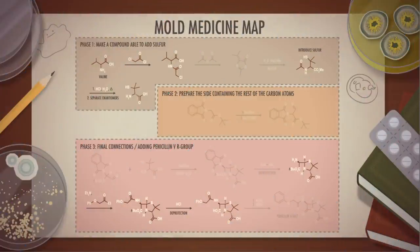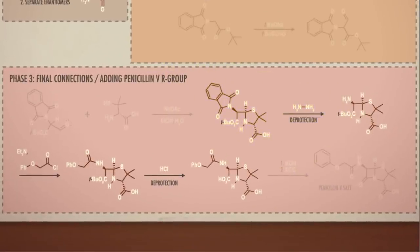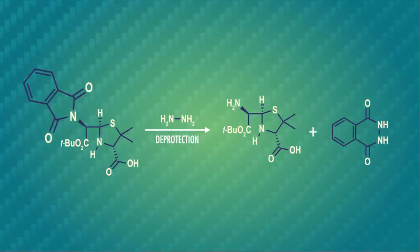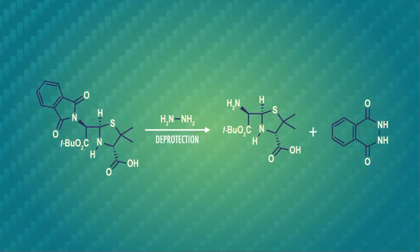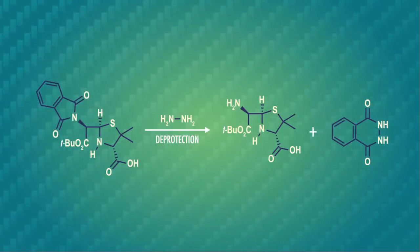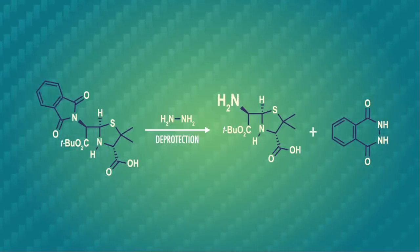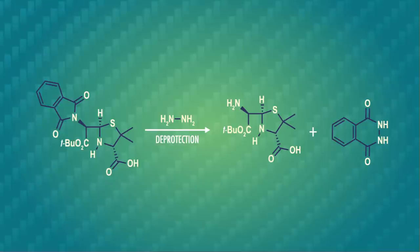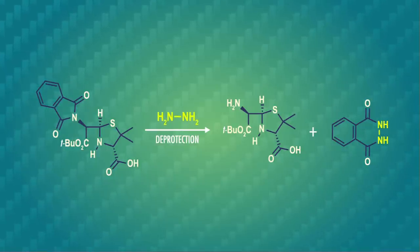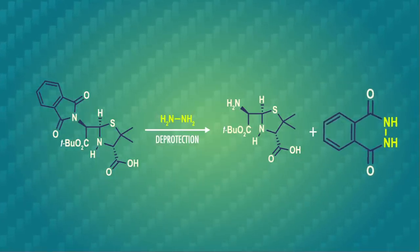We can look to our mold medicine map and the synthesis of penicillin V for our third and final amine protecting group, a phthalimide. This protecting group prevents the amine from reacting with an aldehyde in an earlier step of the synthesis. In this step, it's being removed from our protopenicillin structure. The removal includes swapping the amide-like linkages to make a sort of double amide side product.